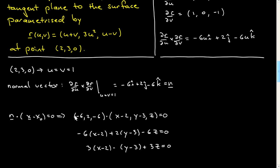All I need to do is take the dot product between that normal vector and essentially the difference between the point x, y, z and the point in question, 2, 3, 0. So here's the normal vector written in component notation, dotted into x minus 2, y minus 3, and z minus z-naught — z-naught is 0, so that's just z. I take the dot product and get this equal to 0.